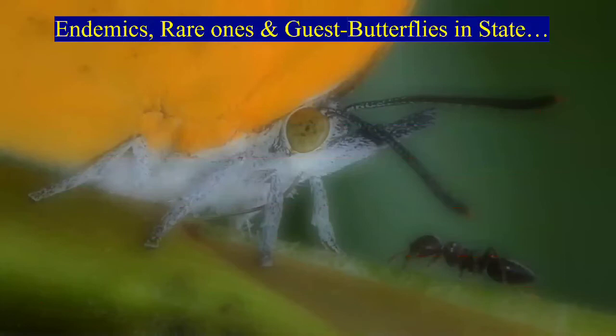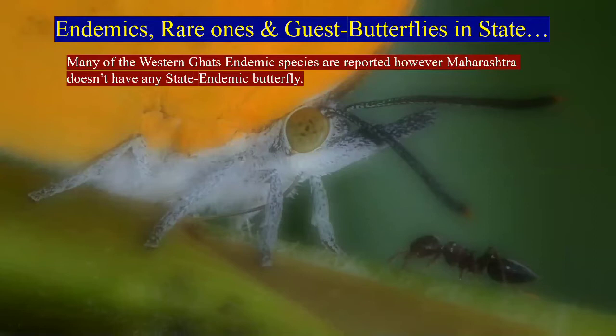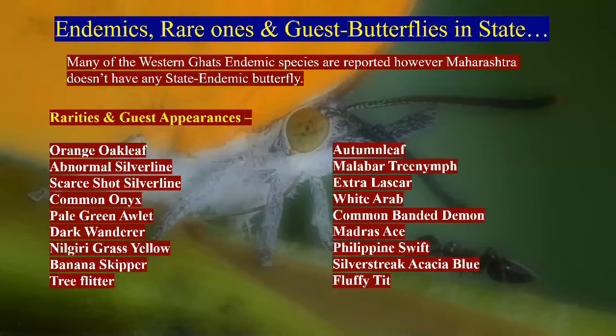Moving on to endemic species, rare ones, and guest appearances. Though Maharashtra has no state-endemic butterfly, it shows the presence of many Western Ghats endemics. Rarities and guest appearances include orange oak leaf, autumn leaf, abnormal silverline — one identity of the state — Malabar tree nymph, star shot silverline, extra lascar, and common onyx, very recently found in Maharashtra.